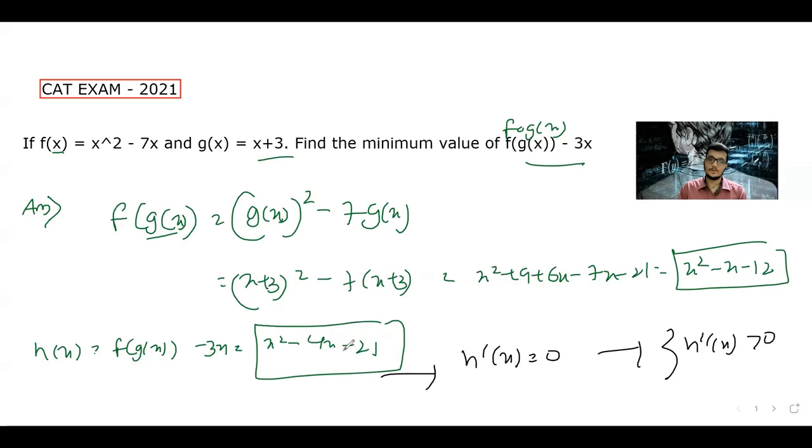What is h dash x? The derivative of x square? The derivative is like this: x to the power n equals n times x to the power n minus 1. So x to the power 2, so 2x minus 4 equals 0. So x equals 2. This is the critical point.